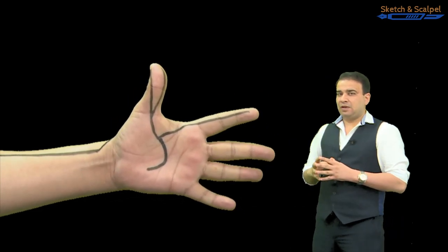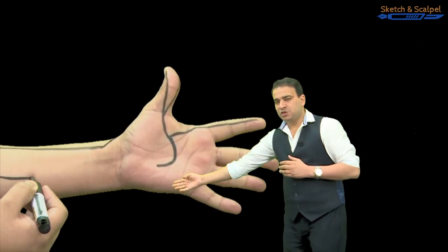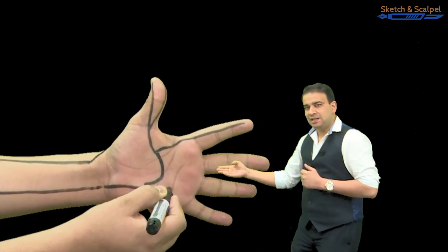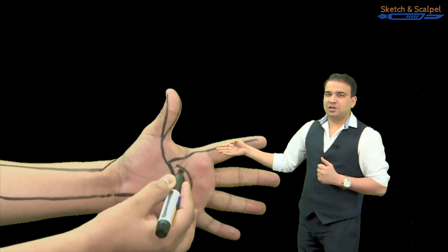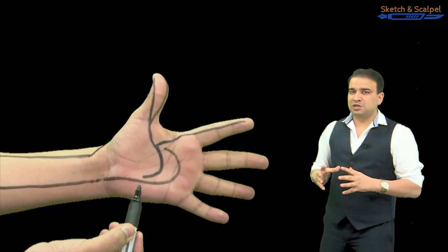Whereas on the other hand, if you look at the ulnar artery, the ulnar artery will run superficial to the retinaculum. You can see it is running superficial to the retinaculum, will go more distally in the hand and form the arch which is present at the distal palmar crease, called the superficial palmar arch.